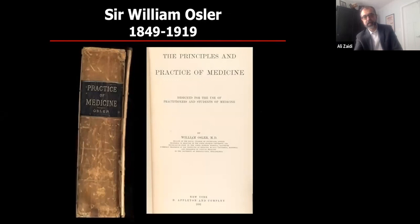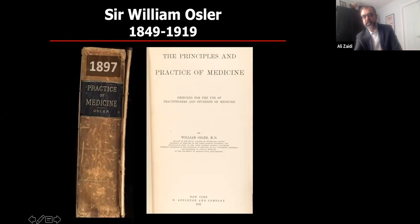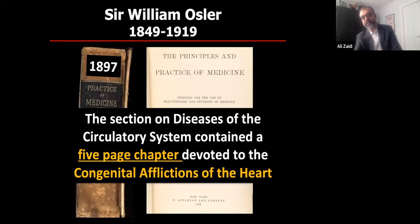William Osler — called a philosopher physician — was a pioneer. In his book The Principles and Practice of Medicine in 1897, he had a section on the circulatory system with a five-page chapter devoted to the congenital afflictions of the heart. Even in the late 1800s, someone like Osler was writing about congenital heart disease in his textbook.